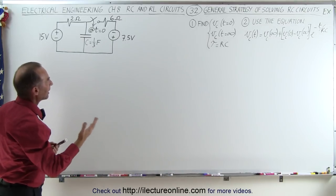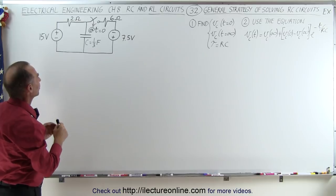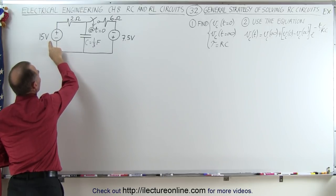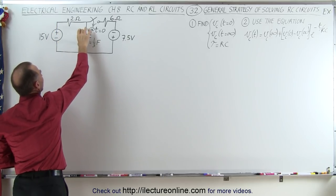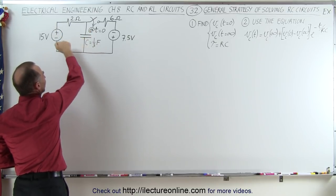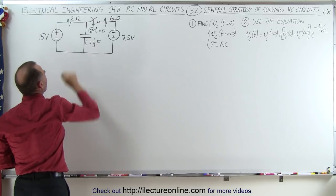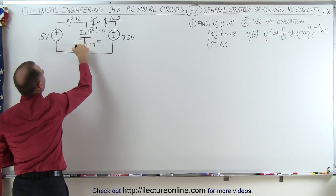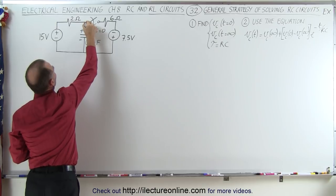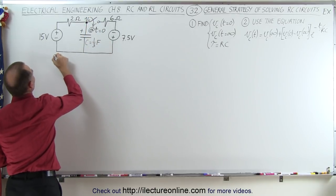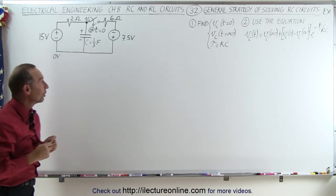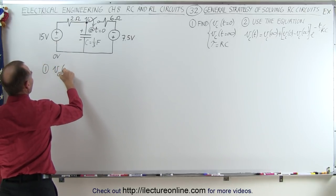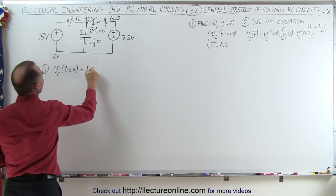We start by finding the voltage across the capacitor before the switch closes. Before the switch closes, this voltage source has had plenty of time to put 15 volts across the capacitor. Current should not be flowing, so we'll have 15 volts across the capacitor — a 15 volt rise and a 15 volt drop. If I call this v sub c and this the zero volt point, the voltage across the capacitor will indeed be 15 volts at t equals zero.